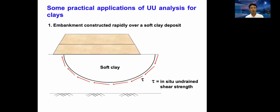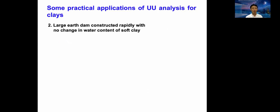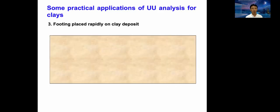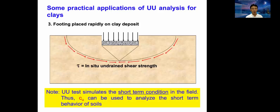Practical applications of UU analysis are similar to CU: embankment construction rapidly over soft clay, large earth dam construction rapidly with no change in water content of the soft clay, and footing placed rapidly on a clay deposit. The UU test simulates the short-term condition in the field, and C_U can be used to analyze short-term soil behavior.